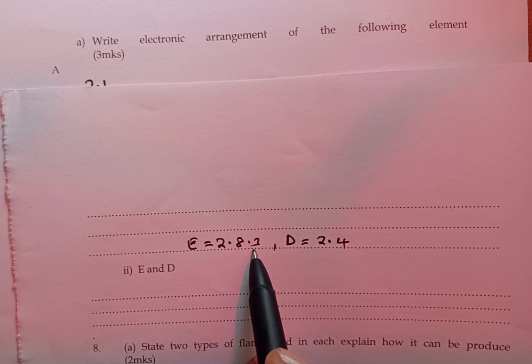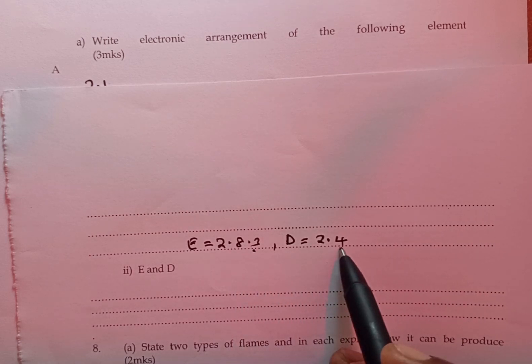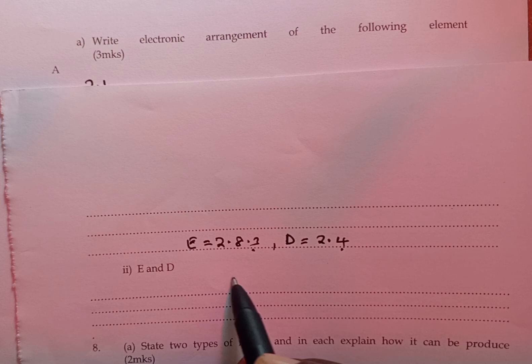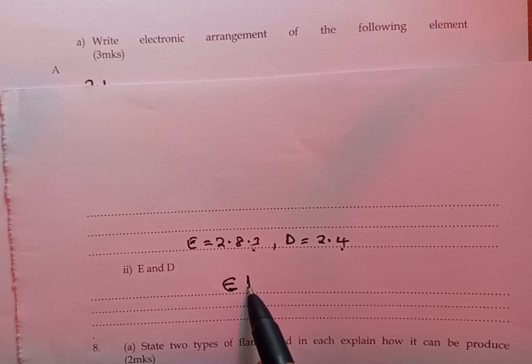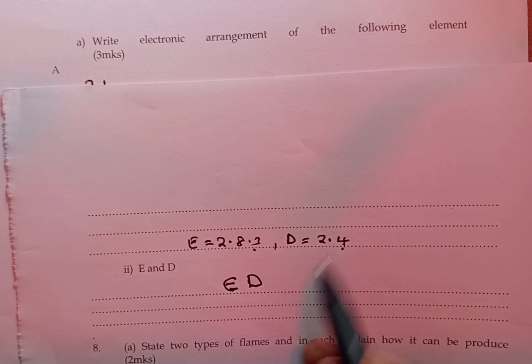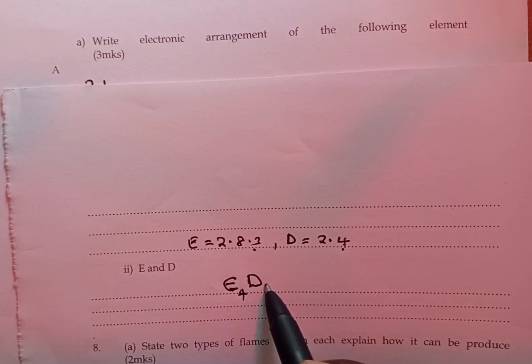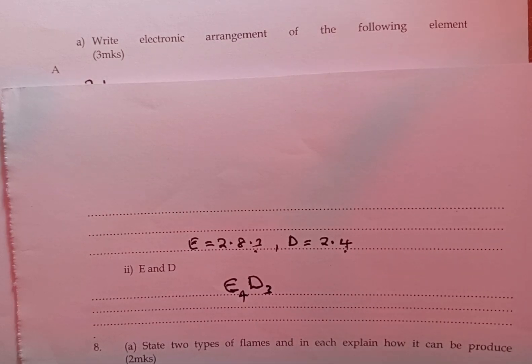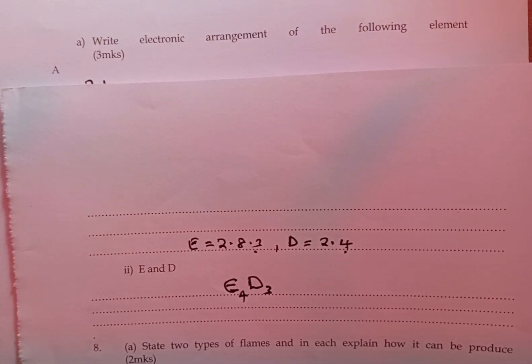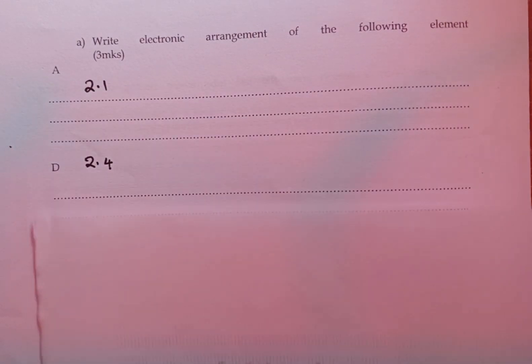Looking at the valences again, E has a valency of 3, D has a valency of 4, and therefore the compound formed would be E, D. But D has a valency of 4, it goes to E, then E has a valency of 3, it goes to D. And by so doing, we have written the correct formula of the compound formed when E and D combine or react.